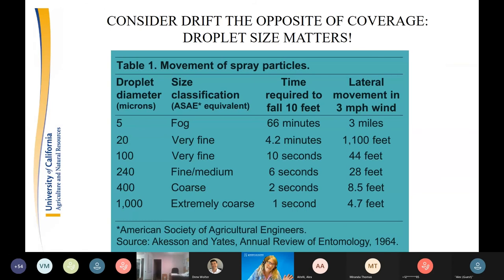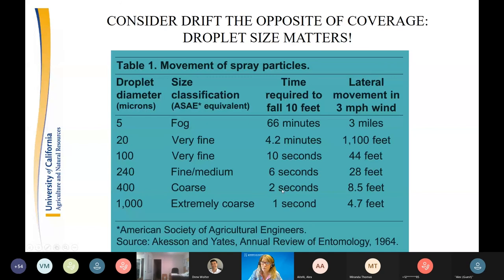Droplet size matters because larger droplets simply don't drift as much. Work by Atkinson and Yates showed time required for droplets to fall 10 feet and lateral movement in a 3 mph wind — fine droplets stay airborne longer, giving them more opportunity to move off-site. Coarser droplets fall out more quickly and don't drift as far.